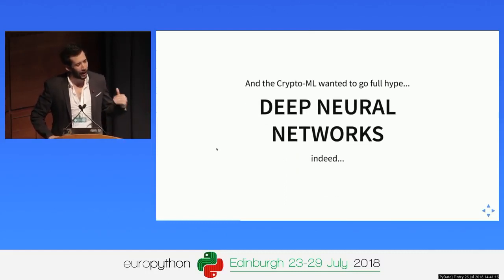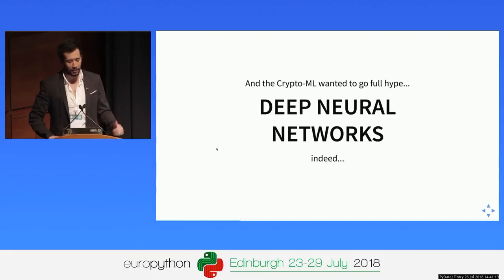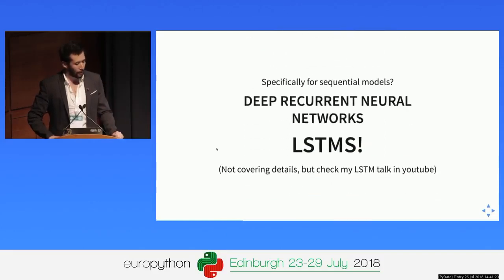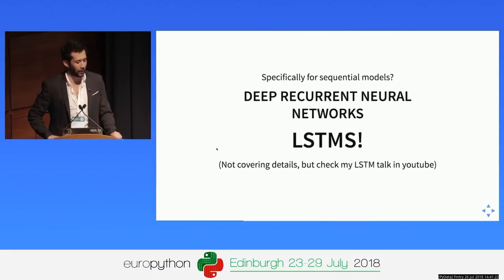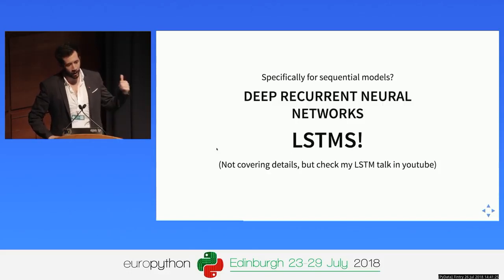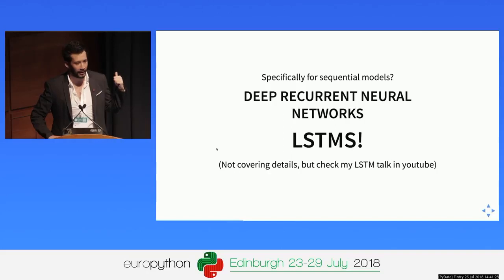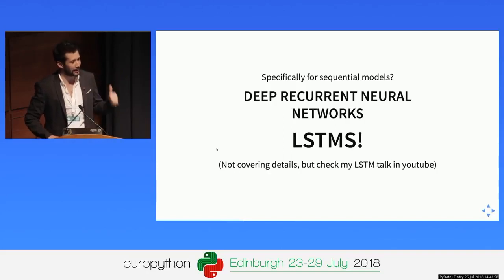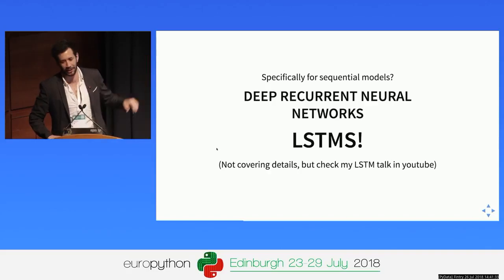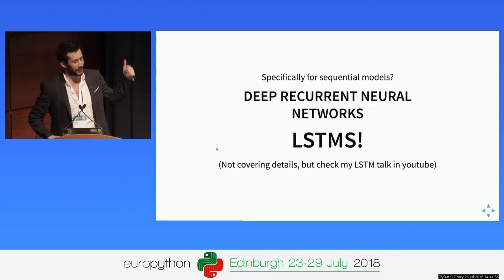The CryptoML team wanted to go full hype — linear regression wasn't enough. So they wanted to use deep neural networks, more specifically recurrent neural networks. In this case, we're going to be using LSTMs. I'm not going to be diving into details as I found out a few minutes ago that my talk was only 25 minutes, so if you want that section you can check out one of my other talks on YouTube.